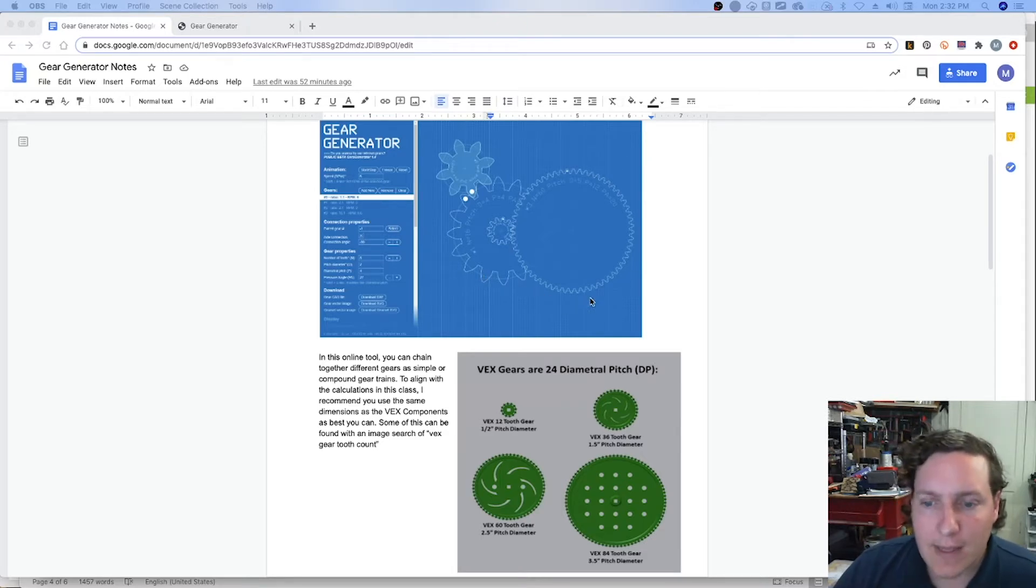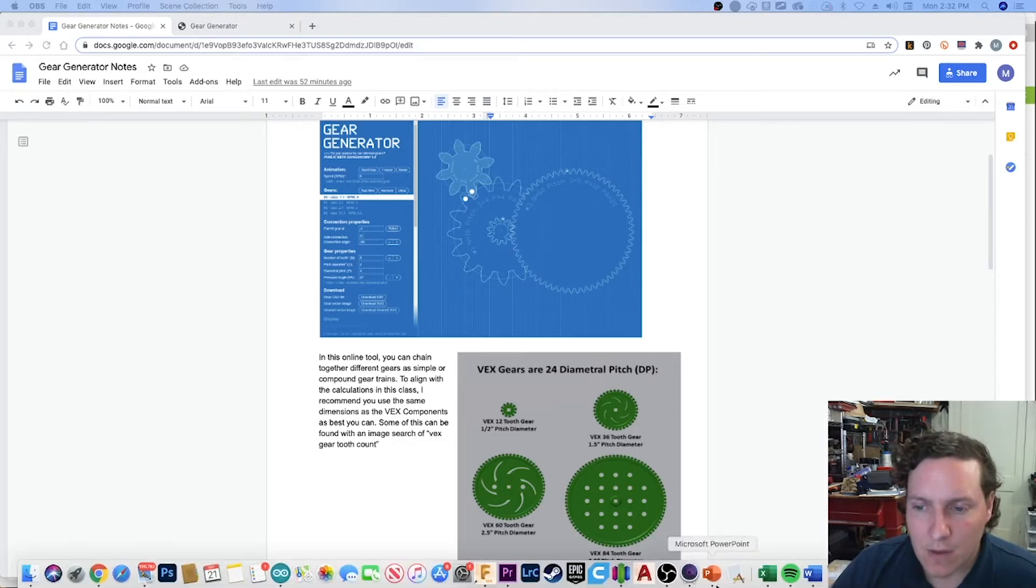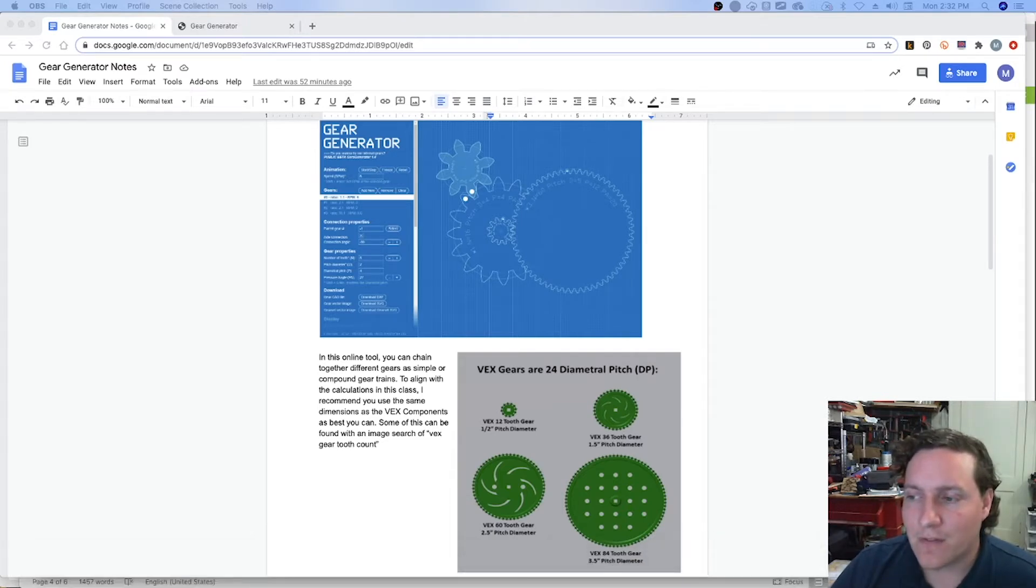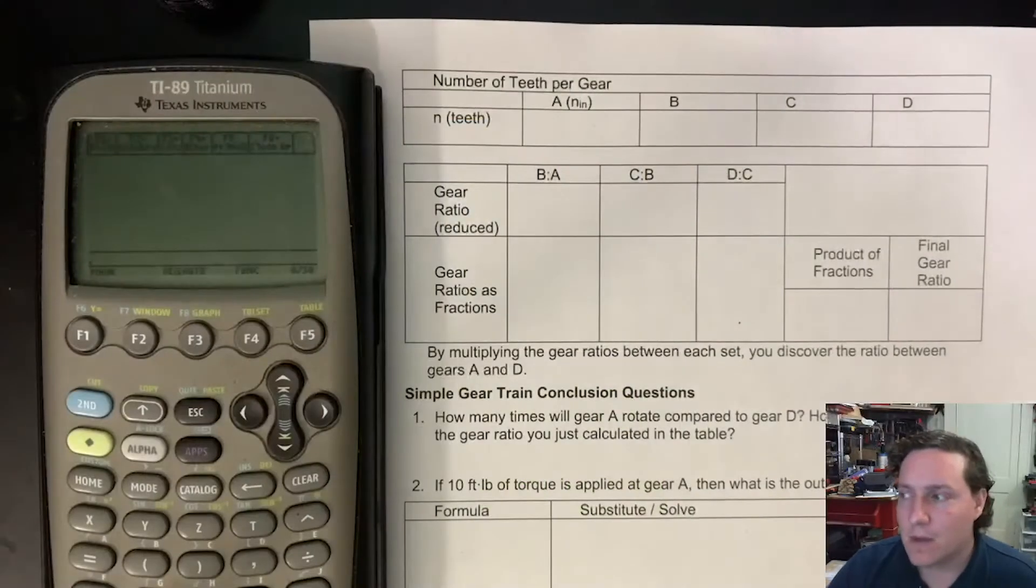But before we get there, we're going to have to look at the calculations. What I'm going to recommend that you do is work off of a paper copy using these gear measurements, activity 1.1.3, to help us out.